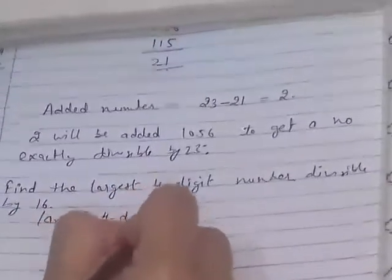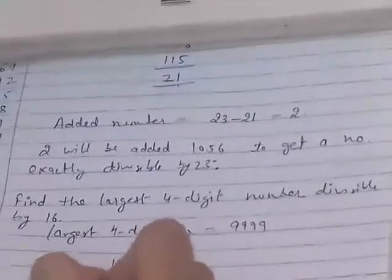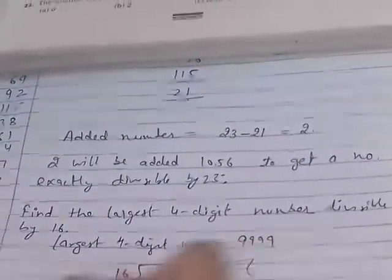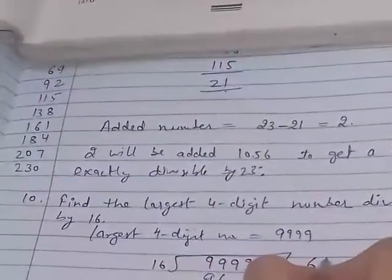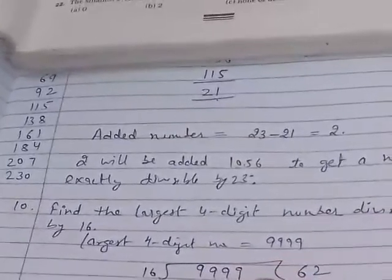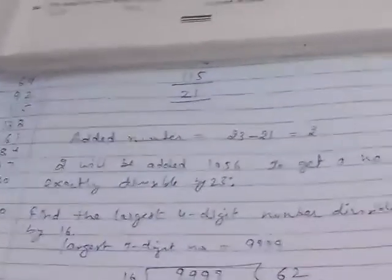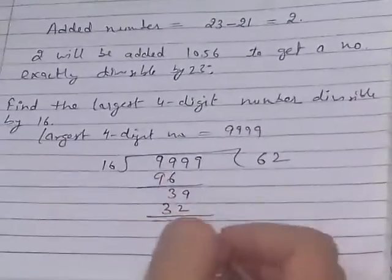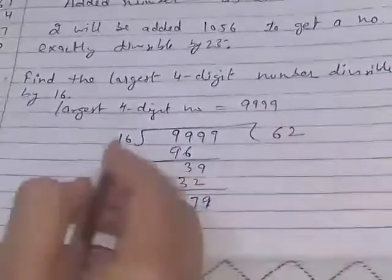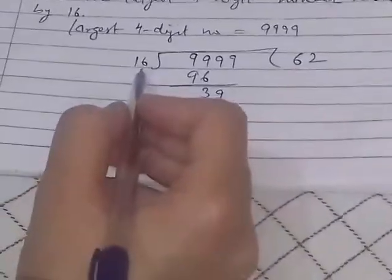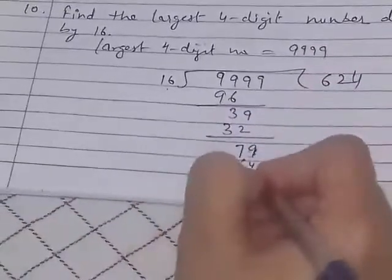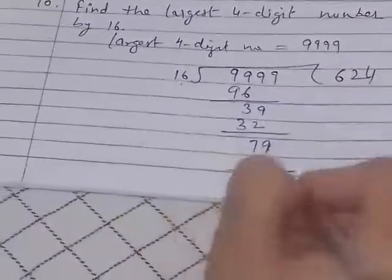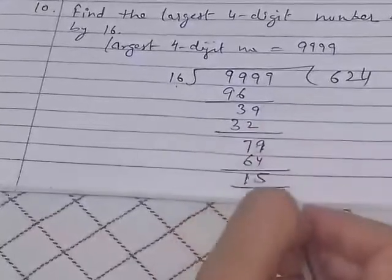Largest 4 digit number is 9999. Now divide it with 16. 16, 6 times is 96, 2 times is 32, 4 times 64 and 5 times 80. So subtract 15. Now it is not completely divisible.